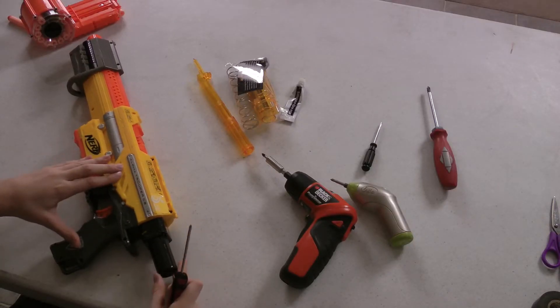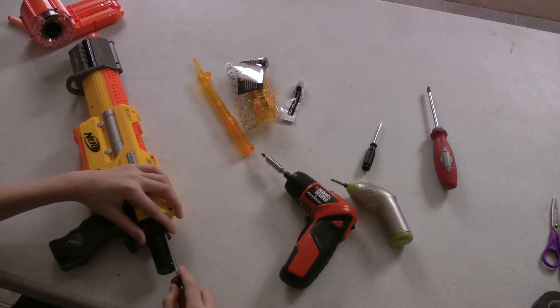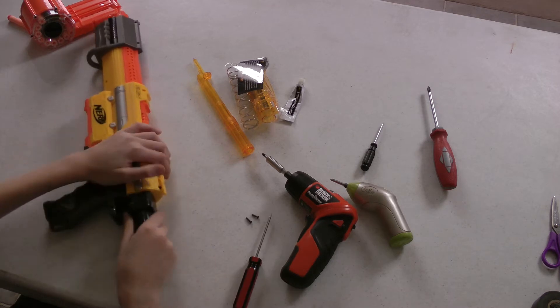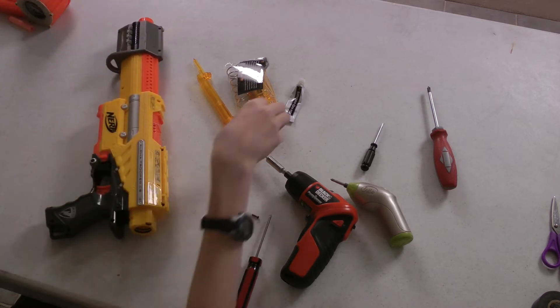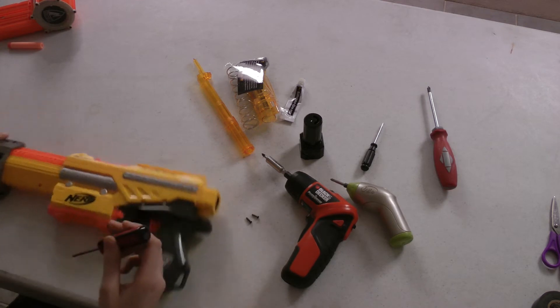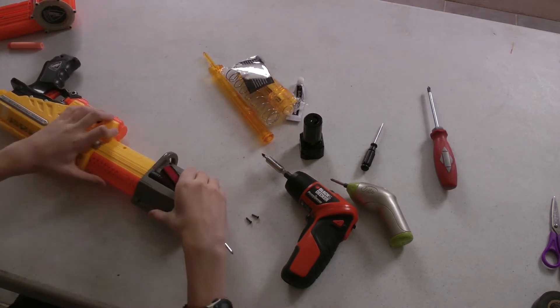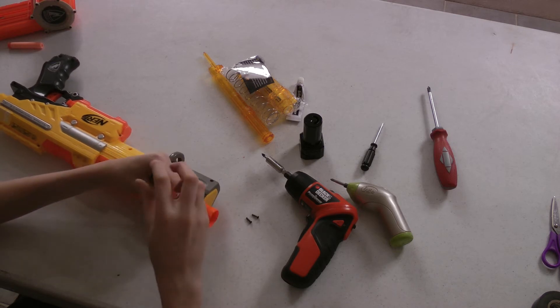So first, we're going to have to unscrew this piece right here because this piece holds the whole gun together. So let's get this off. So now I have to pull that off. Now we have to unscrew this piece right here next, the other part that holds the gun together.